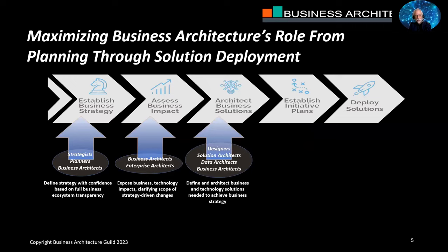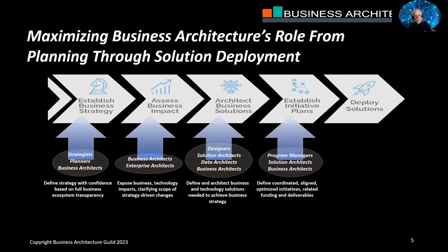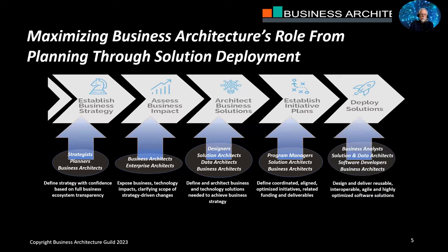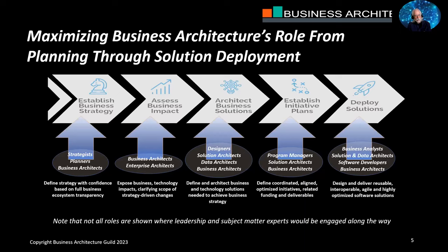In the design stage, we need to know what the future looks like — whether the data architecture or solution architecture needs to change — because that impacts how we frame and invest in initiatives. Going into solution delivery, we continue using the same business architecture from the front end. Not all roles are shown — there are subject matter experts, leadership, and others — but architects play a key role throughout all stages. This gives us another view of the BizBok Guide framework.